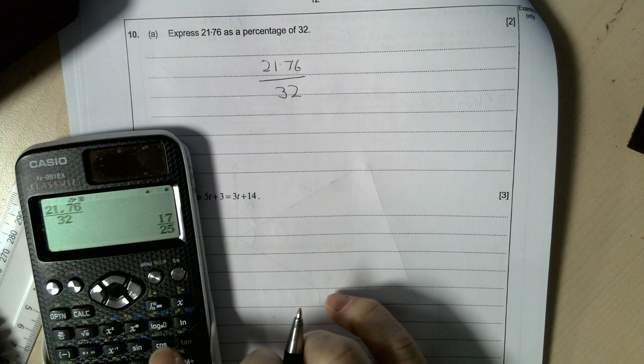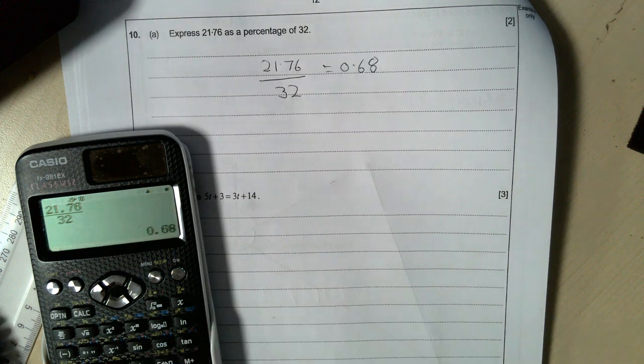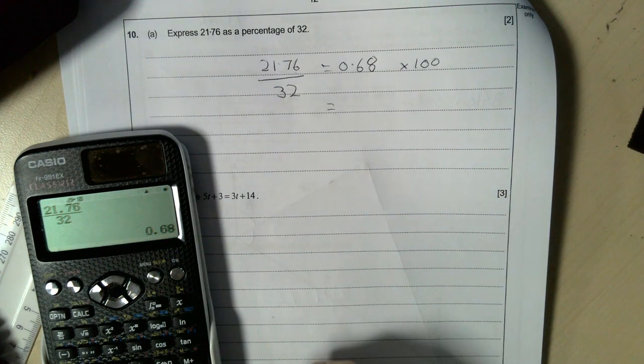That gives me 0.68. Is 0.68 a percentage or a decimal? It's a decimal. So to change it to a percentage, you multiply by 100. So 0.68 times 100 is 68%.